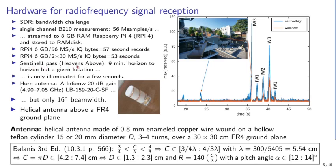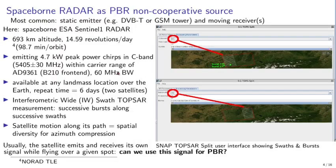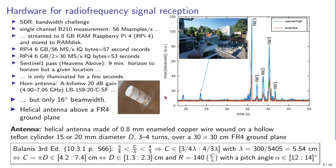A Sentinel-1 pass, as given by Heavens-Above, lasts nine minutes from horizon to horizon. However, due to the illumination scheme — where a given location is illuminated during a single interferometric wide swath and burst — the useful duration is only about five seconds. A 53-second record gives ample margin before and after the useful window. We will use two helical antennas, record about 50 seconds on both channels, then extract each interferometric wide swath.